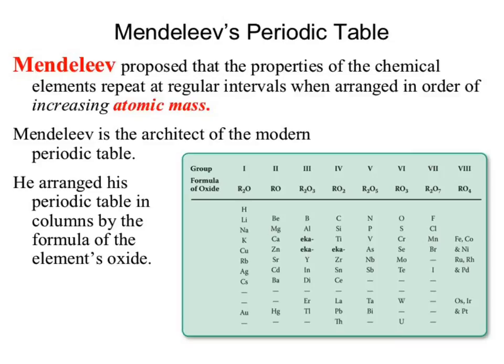One of the things that stood out, and why he ends up getting credit, is where it says 'eka.' What do those 'eka' labels mean? He predicted there was going to be more elements — he said there's a hole here, there should be something here. And not just that there should be something there, but it should react this way with oxygen, it should look like this, it should have this density, it should have this mass.